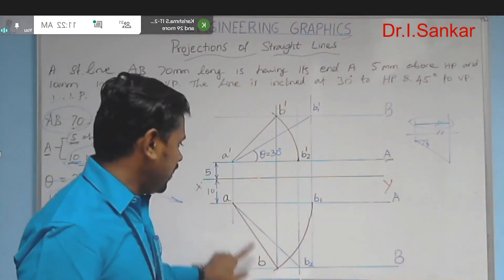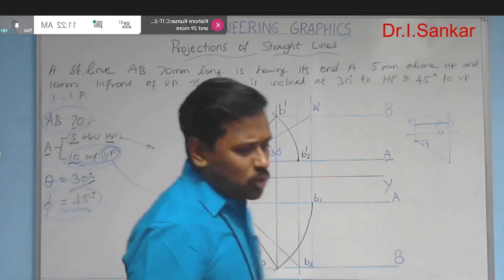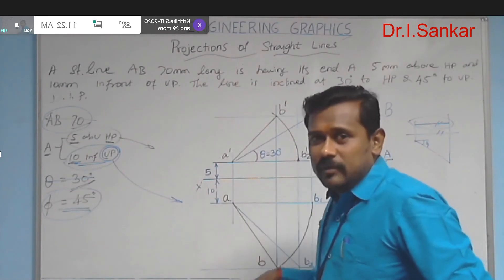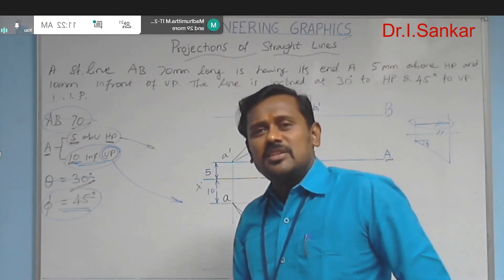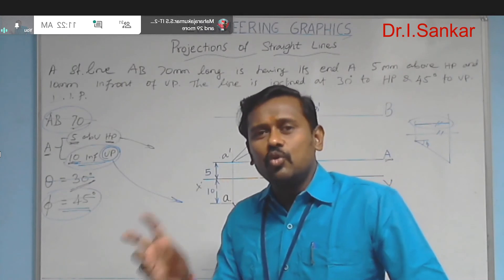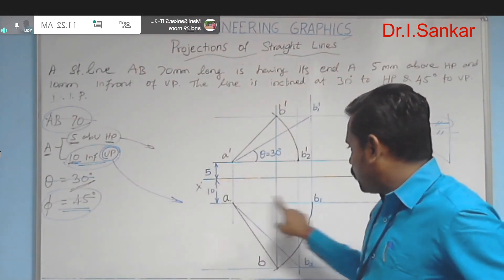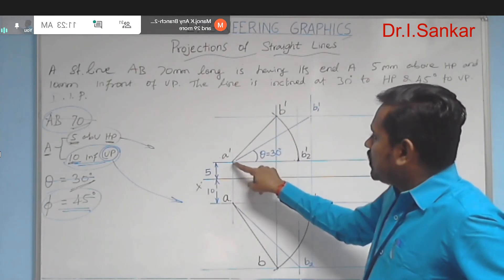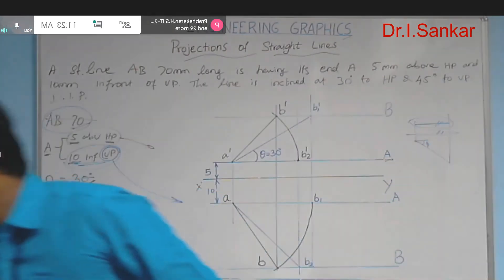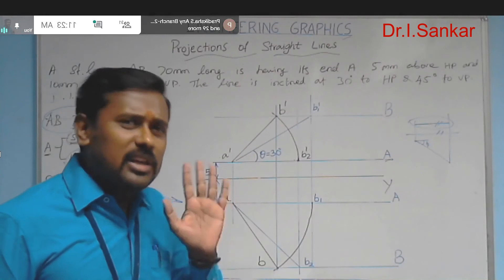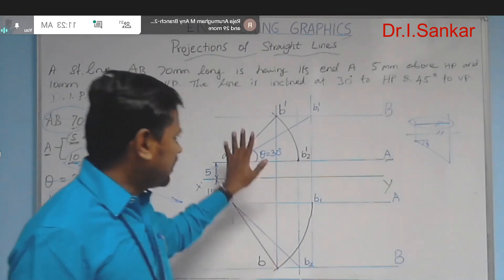The final answer consists of a'b' (front view) and ab (top view). To obtain these directly is not possible — first you must consider the line inclined to HP and parallel to VP, then consider the line inclined to VP and parallel to HP. In this way, solve two single inclination problems in a single station. After both steps, you get a front view length and a top view length, which are then used to draw the final front and top views.